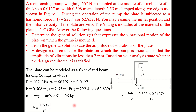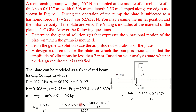To understand where the formula comes from, refer to strength of materials, deflection of beams, simply supported beam with center-point loading. We need E, I, and L. E is already given. For a rectangular cross-section, the moment of inertia I = bd³/12, where b = 0.508 m and d = 0.0127 m. Substituting: k = 192 × (207 × 10⁹) × I / (2.55)³.